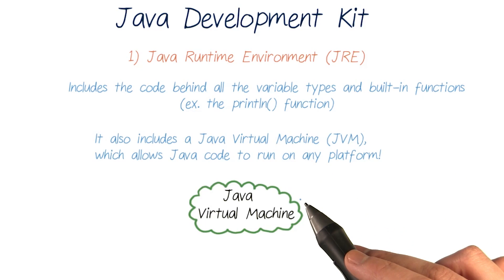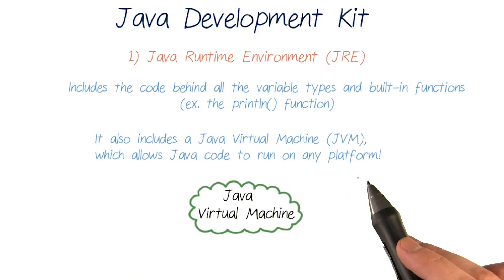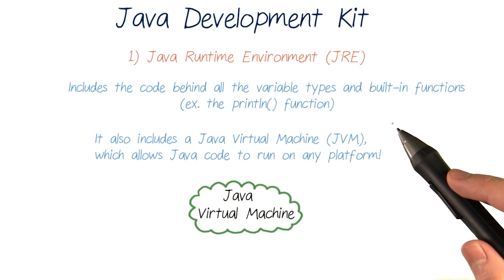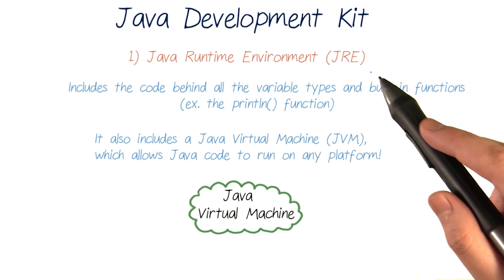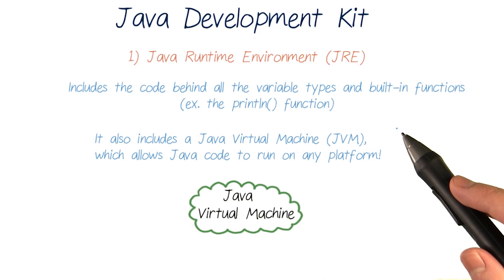The runtime environment also includes a Java Virtual Machine, which is basically a downloadable machine that allows Java code to run on any computer, whether it's a Windows, a Mac, or another platform. And lots of computers already have the runtime environment installed, because it's needed to run any Java applications that appear on web pages.